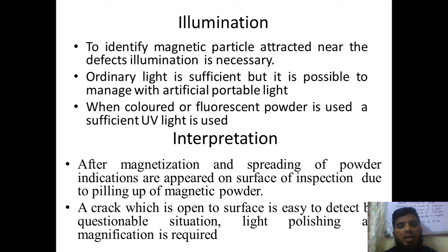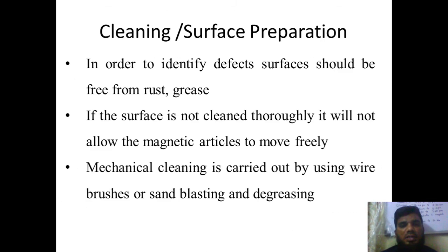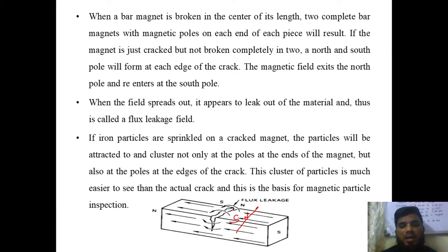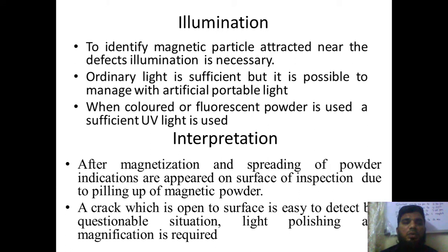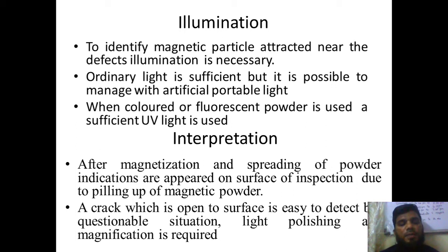Next is illumination. Once you are applying the magnetic particles, based on their behavior — how they have arranged around a crack — we try to illuminate by using sufficient lights. Either we can use ordinary light, or if it is a fluorescent type of powder, fluorescent powders are mixed with some kind of dyes which give different colors in the presence of UV lights. Next is interpretation. After seeing the behavior — how they have been arranged after magnetization and spreading of the powder — we can interpret how the crack is present and to what extent the crack is open.